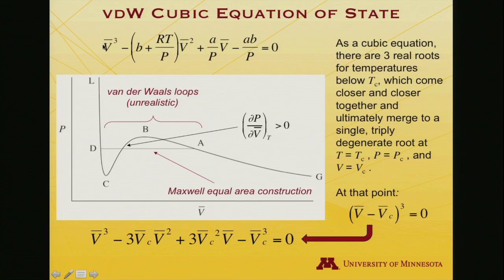The nice thing is I can compare: V cubed compares to V cubed. Here's a term in V-bar squared, so I can relate 3 times the critical molar volume to B plus RT over P. And I can relate 3 V-bar-C squared to A over P. Evidently, V-bar-C cubed is AB over P.